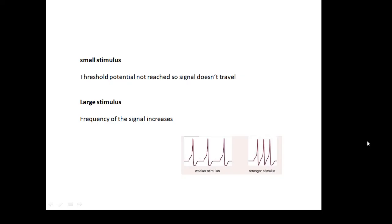If the stimulus is very small and we don't reach the threshold voltage, then there is no signal. If there is a very large stimulus, it's not that the action potential is bigger — it's just that there are more pulses. The frequency of the signal increases. So the strength of the stimulus changes the frequency of the signal, not the strength of the signal.